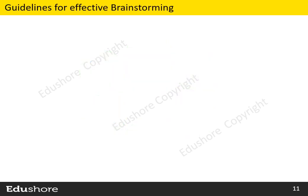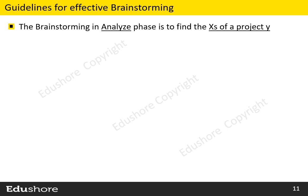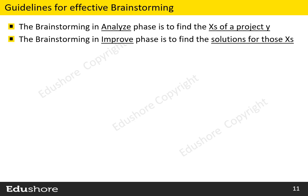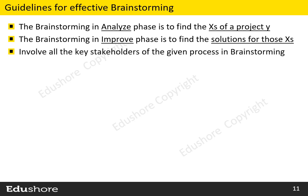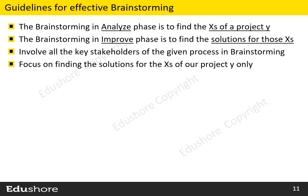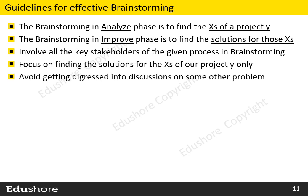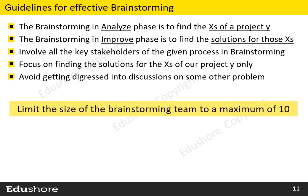Let us look at the guidelines for effective brainstorming in the Improve Phase. The focus of brainstorming in the Analyze Phase is to find the root causes of a Project Y, whereas the purpose of brainstorming in the Improve Phase is to find solutions for those root causes. It is very important to involve all the key stakeholders of the given process. We should focus on finding solutions for the root causes only, and avoid getting digressed into discussions on other problems. It is better to limit the brainstorming team to a maximum of 10 people, as studies suggest that beyond 10 people there would be challenges managing communication channels.